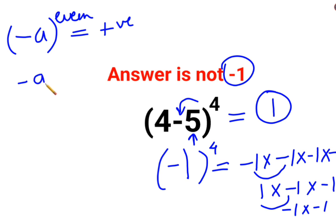And if you have a negative number raised to an odd value, the answer will always be negative. And since 4 was an even number, that is why the answer which we got was a positive 1.